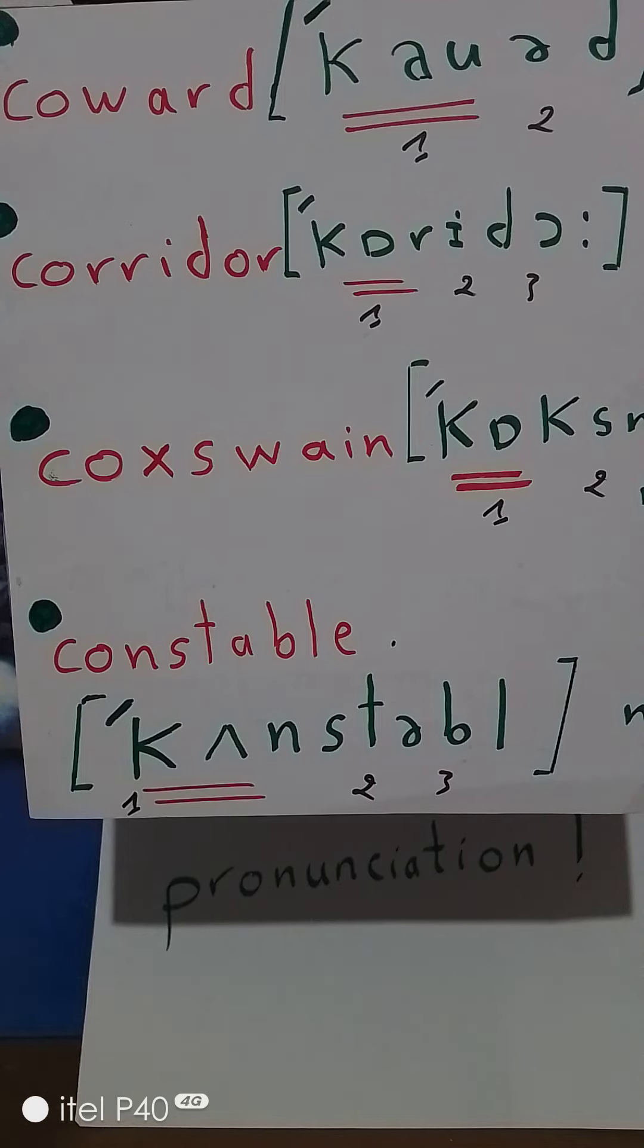The last word is constable. Constable has three syllables with stress on the first syllable. A constable is a police officer. So check your English pronunciation: coward, corridor, coxswain, constable. Again: coward, corridor, coxswain, constable. See you next time, goodbye.